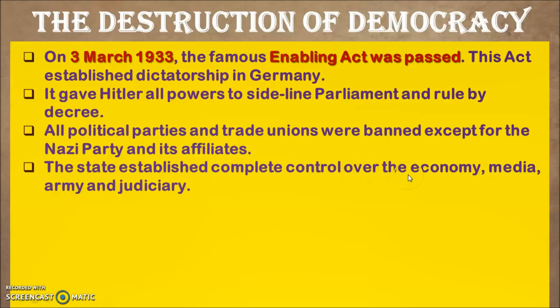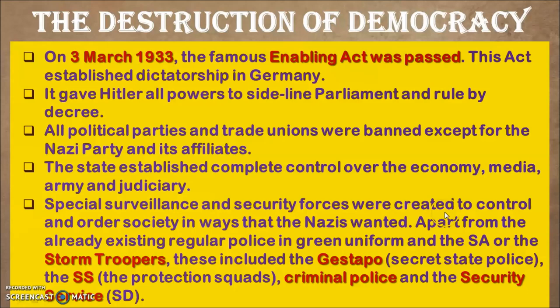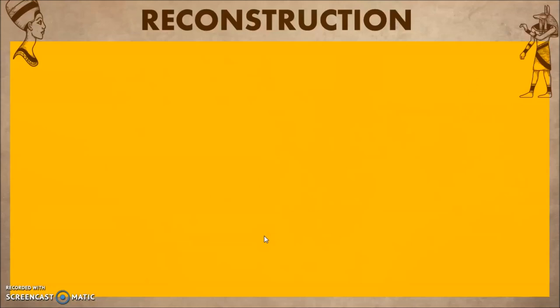The state established complete control over the economy, media, army, and judiciary. From the point the Enabling Act was passed, the dictatorship started. Special surveillance and security forces were created to control and order society the way the Nazis wanted. Apart from the regular police in green uniforms and the SA or Storm Troopers, these included the Gestapo, the SS (Protection Squad), criminal police, and the security services.